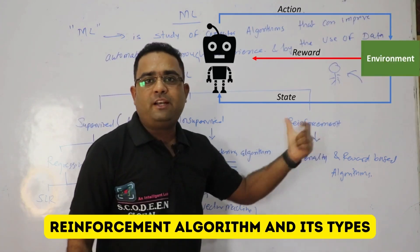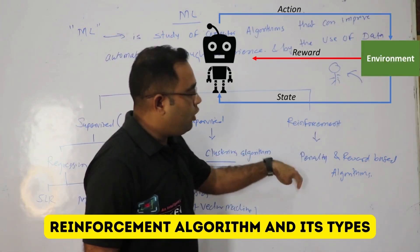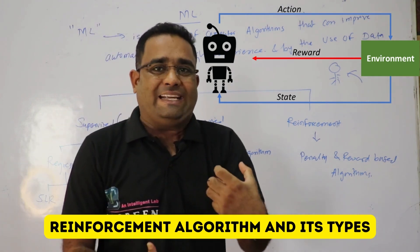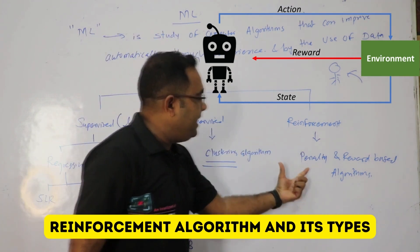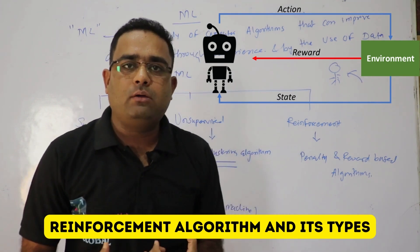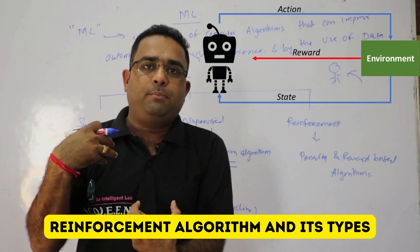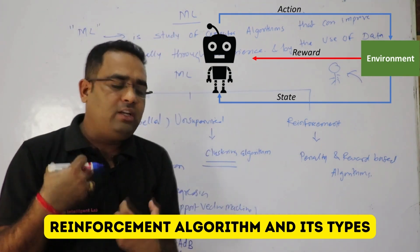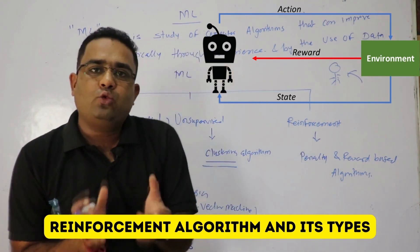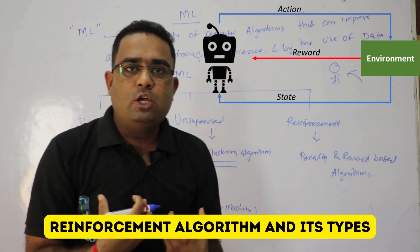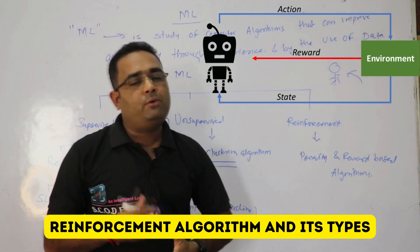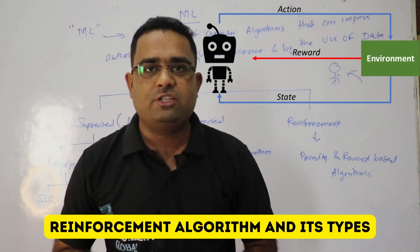In reinforcement algorithm, our algorithm learns based on real-time experience — it is a penalty-reward based algorithm. If it gets a reward, that state will be stored. If it gets a penalty, it will remember that particular state. Frankly speaking, this reinforcement algorithm is very useful in artificial intelligence.